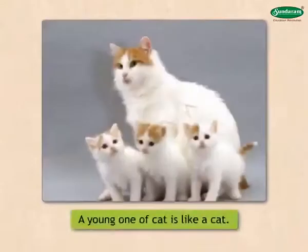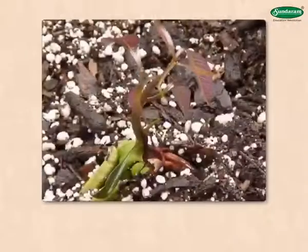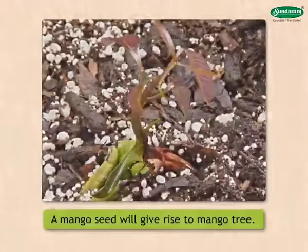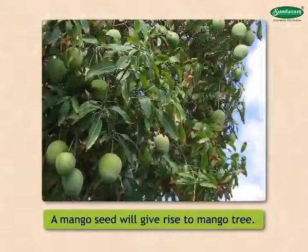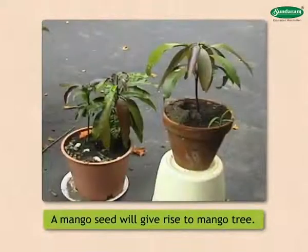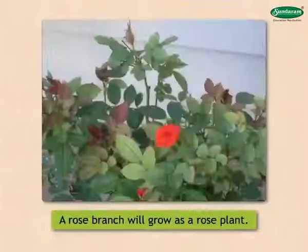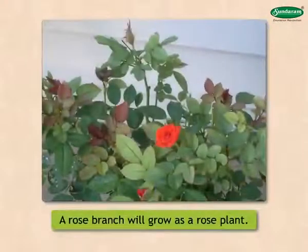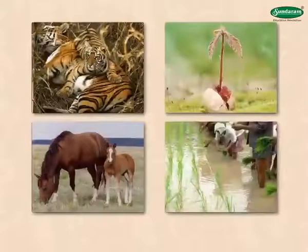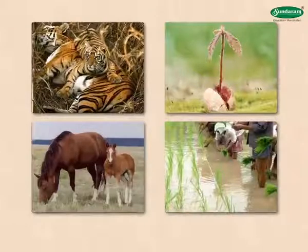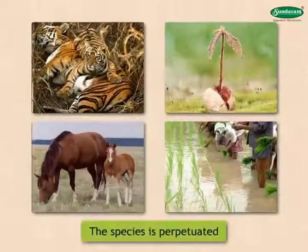A cat's young one is like the cat itself. A mango tree is grown from a mango seed that takes root in the soil, and after a period of time mangoes will grow on the new tree. When a rose branch is planted in the soil, a rose bush grows from it. It means that a species of animal or plant continues to exist through reproduction — in other words, the species is perpetuated.